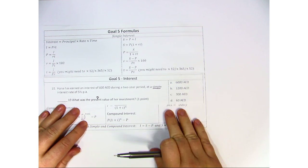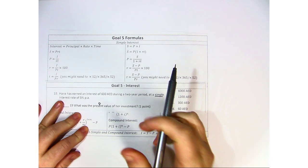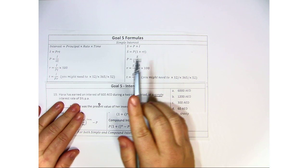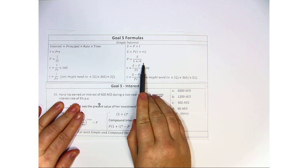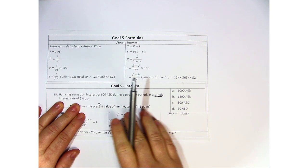Go ahead and just put this right under there so you can kind of see it. We've got two different formulas for P. P equals S divided by one plus RT or P equals I over RT.